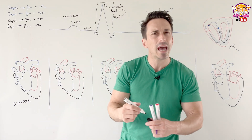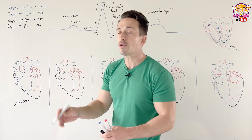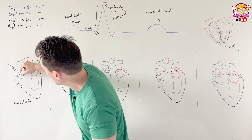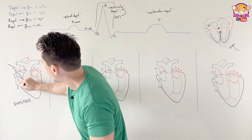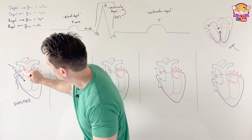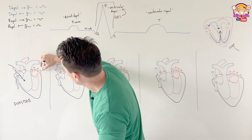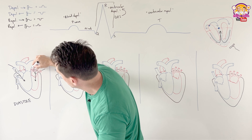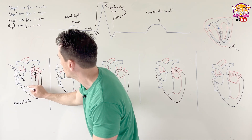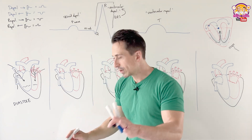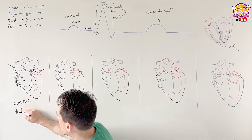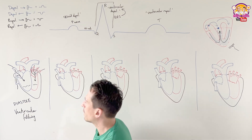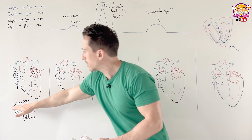In diastole, the heart is relaxed and we have ventricular filling — blood is moving into the ventricles passively, coming in on the right-hand side and the left-hand side. There's no contraction in this process, but blood is starting to fill the ventricles. We call this ventricular filling — a passive process. It's diastole.